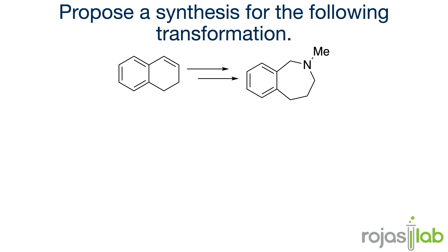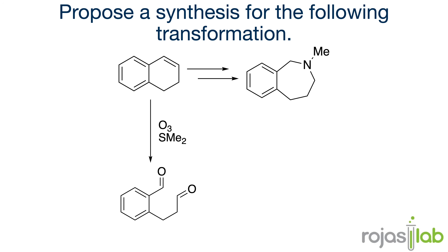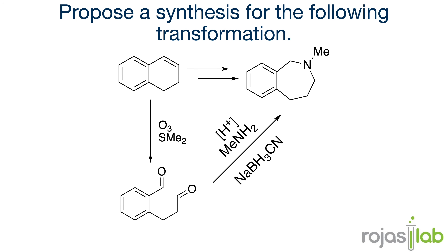Here's another reaction that follows a similar pathway. See if you can figure out the answer before I give it to you. Again, here we have a cyclic alkene, and we can break that open using the same conditions — O3 and DMS — which is ozonolysis. This will split the alkene, giving us two different aldehyde positions. From here, we can use reductive amination to form our brand new cyclic amine structure that has also increased the number of atoms as part of that ring.